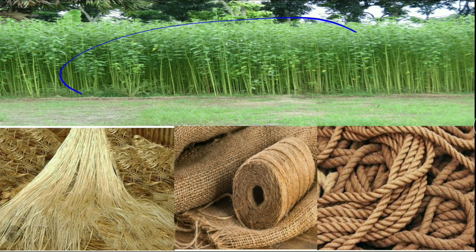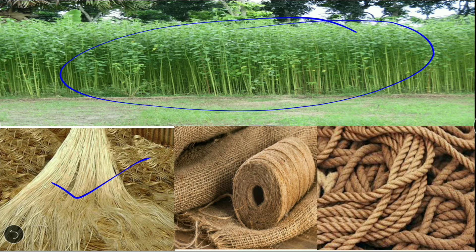These are the jute plants. This shows the flowering stage of the stems, followed by harvesting and immersion in water to rot. This is raw jute, and then fiber is made from it to produce jute material.